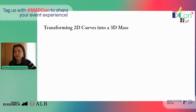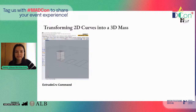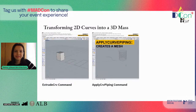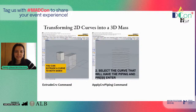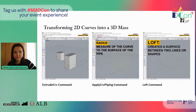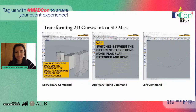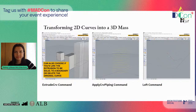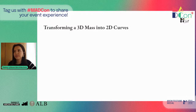Moving into transforming 2D curves into 3D massing. First, the extrude curve command gives height to any curve, transforming your linework into a surface — you can extrude to both sides, choose the height, and delete the original linework if needed. The apply curve piping command creates a mesh pipe around a curve, with options to choose the radius, number of segments, faceted options, or whether the pipe has a cap. Finally, we have the loft command, which creates a surface between two lines or two shapes. The lofted surface is based on the geometry of the curve, so each lofted surface will vary depending on that geometry.